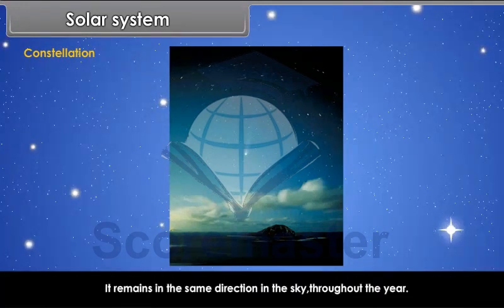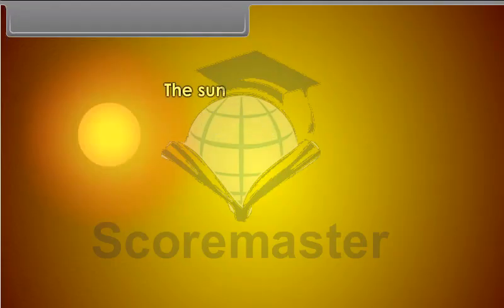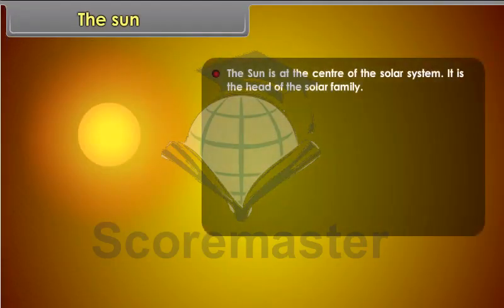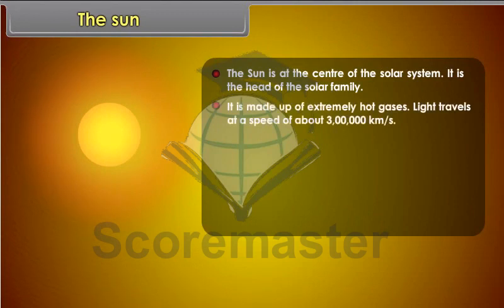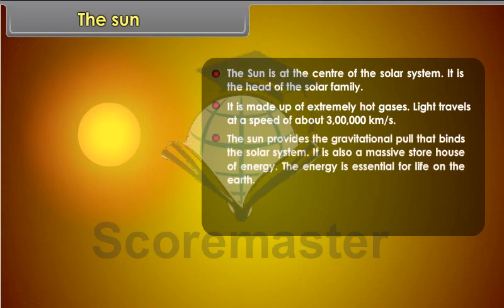The Sun. The Sun is at the center of the solar system. It is the head of the solar family. It is made up of extremely hot gases. Light travels at a speed of about 3 lakh kilometers per second. The Sun provides the gravitational pull that binds the solar system. It is also a massive storehouse of energy. The energy is essential for life on the Earth.